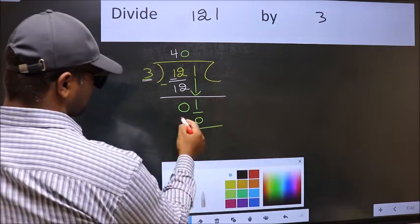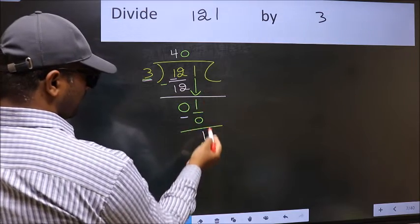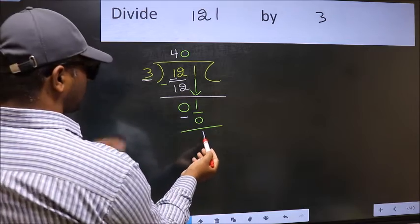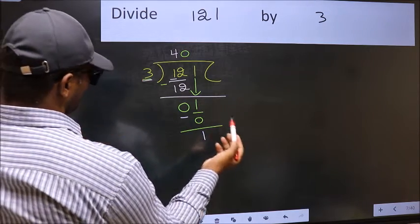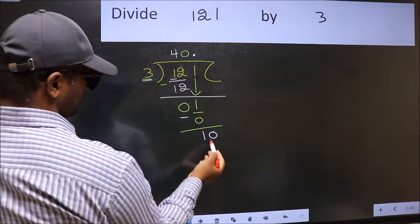Now you should subtract. 1 minus 0, 1. Over here, we did not bring any number down. And, 1 is smaller than 3. So, now we can put a dot and take 0. So, 10.